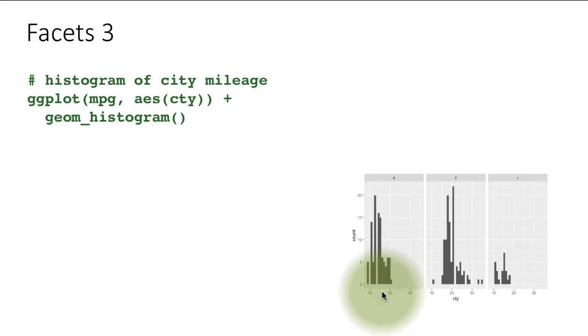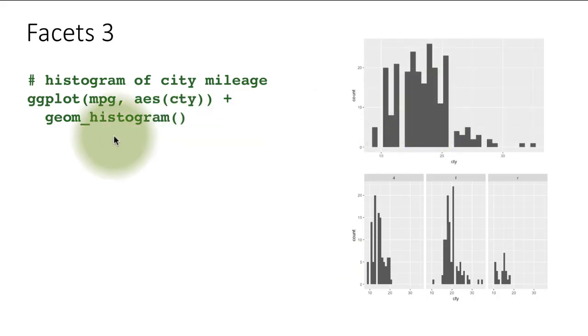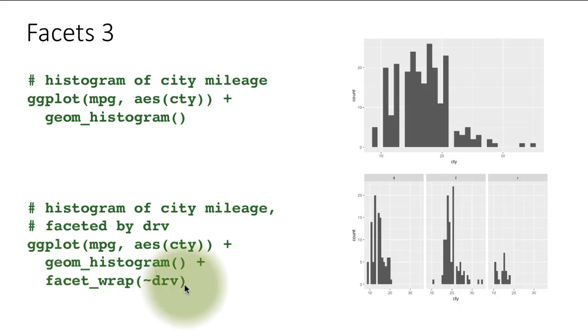Remember, earlier we did a histogram of city mileage. That's what came out when we did ggplot mpg, aes city, geom_histogram. Notice this is slightly different in that we put the aesthetic within ggplot itself. We'll revisit that point. But suppose we say, I want to generate this histogram for different values of the drive of the car. No problem, just add a facet_wrap.